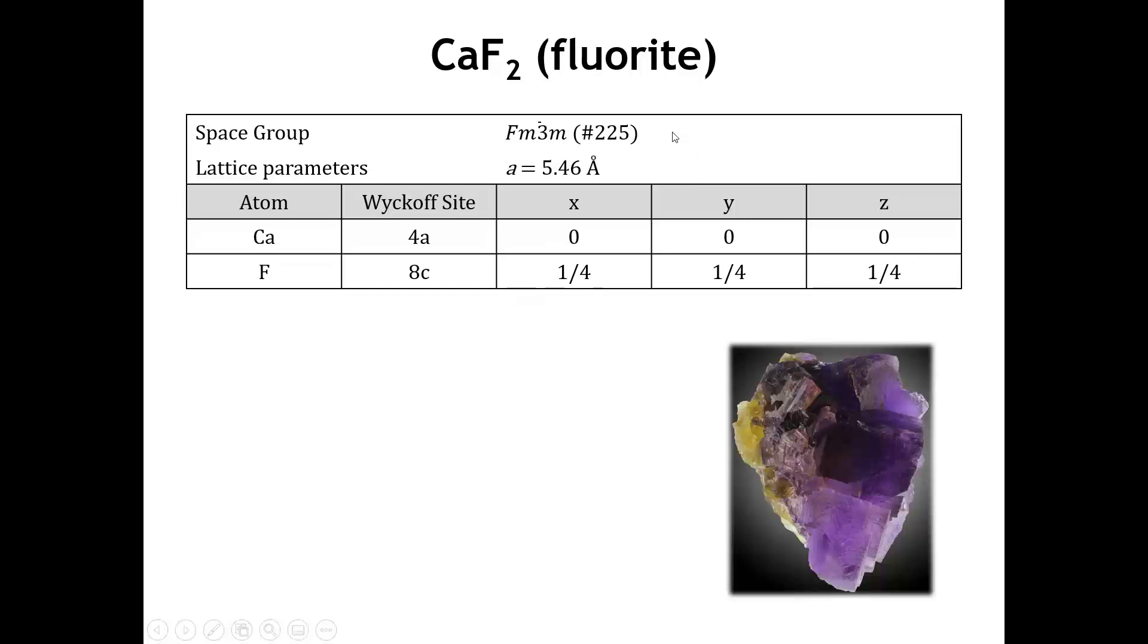Fluoride belongs to space group Fm3̄m, which is space group number 225 out of 230. So, this is a space group that has a lot of symmetry operations. It's a cubic space group, so we only need one variable to describe the dimensions of the unit cell, and that is the length of the edge of the cube, here 5.46 angstroms.